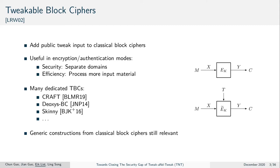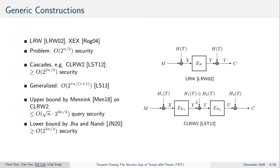Nowadays, many dedicated tweakable block ciphers exist, such as Craft, Deoxys-BC, or Skinny. Nevertheless, generic constructions from classical block ciphers are still relevant. Such constructions were proposed already with the original proposal of tweakable block ciphers themselves by Liskov et al. in 2002.